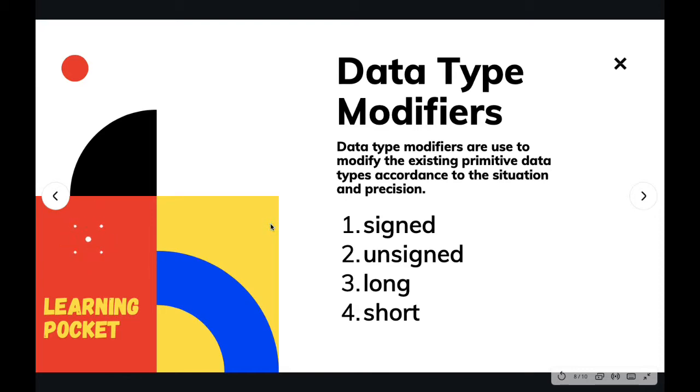In C, we have int for integer, character, floating point, double, and we also have long. So we are going to modify them. How are we going to modify them?